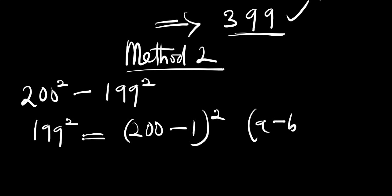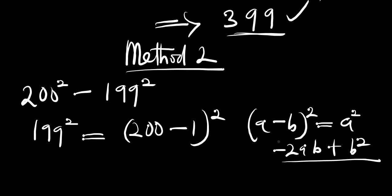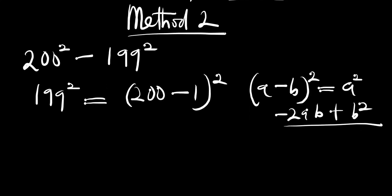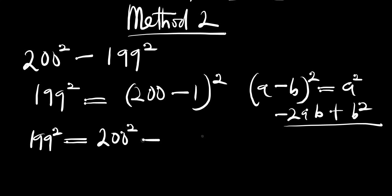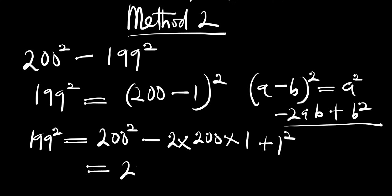The identity is: (a minus b) squared equals a squared minus 2ab plus b squared. Using this, we can say 199 squared equals 200 squared minus 2 times 200 times 1 plus 1 squared, which gives us 200 squared minus 400 plus 1.